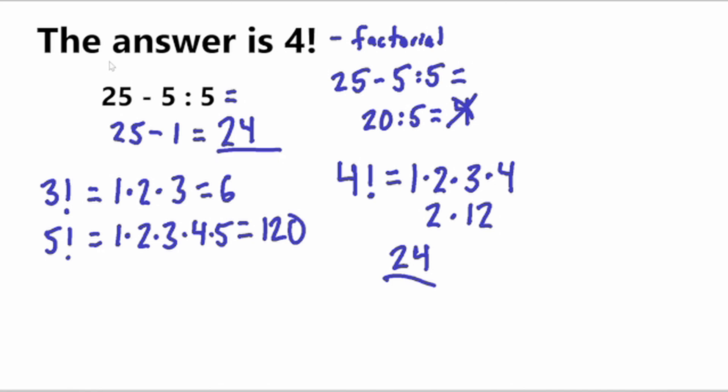So this statement here, the answer is 4, is correct. Well, if you say it out loud, the answer is 4, it would be better to say that the answer is 4 factorial. However, if you write it, writing it like this, the answer is 4 exclamation mark is perfectly correct.